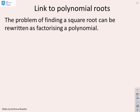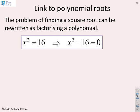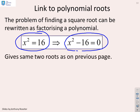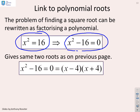Let's look at the link to polynomial roots. If I'm trying to solve x squared equals 16, I could equally write x squared minus 16 equals zero — that's a standard polynomial. Factorising gives x minus four times x plus four, which gives a root at plus four and minus four, the same as on the previous approach.